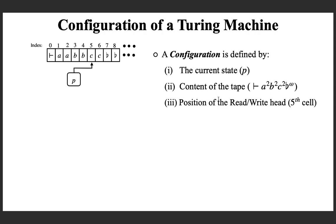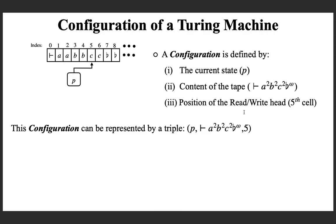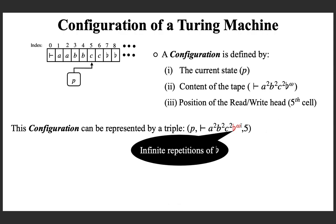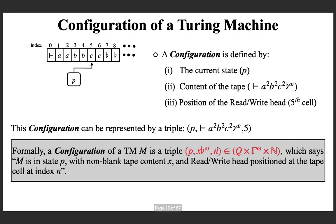So what is the configuration? It is uniquely defined by a triple: the current state, the content of the tape at that point in time, and the position of the read-write head. Blank-omega represents infinite repetitions of blank symbols. Formally, a configuration of a Turing machine M is a triple where the first component is a state, the second is the non-blank tape content followed by infinitely many blanks, and the third is the position of the read-write head.